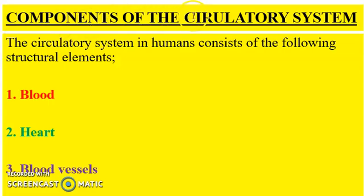Looking at the components of the circulatory system, the circulatory system in humans consists of the following structural elements. These are: one, blood; two, the heart; and three, blood vessels. These are in no particular order. We are going to take these components into detail and explain them.